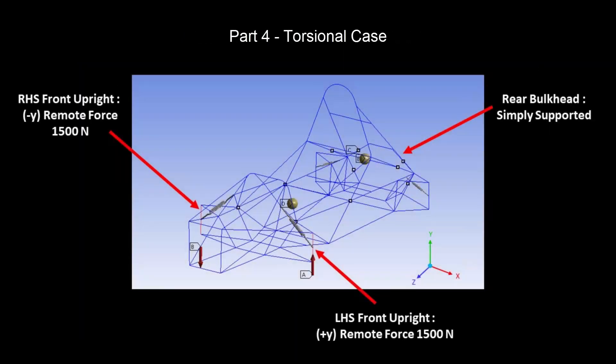For torsional case, the rear suspension mounting points will be simply supported, while the front uprights will have equal and opposite forces applied, thus twisting the chassis along its length.